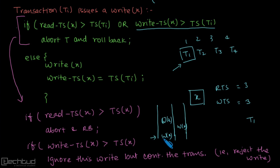So when this write(X) comes, it means that this transaction, this later transaction, this is T2, this is T1. So this later transaction has already performed some write. So we ignore this write, but we continue the transaction. So this is Thomas Write Rule.